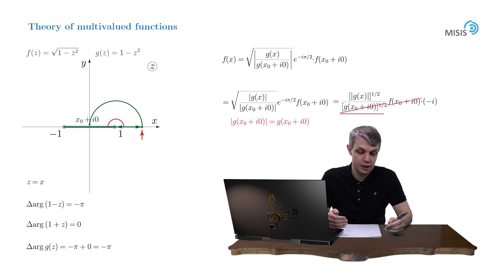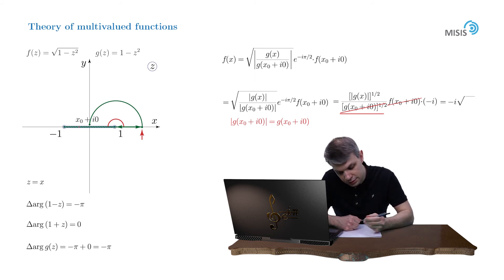And as a result, as it should be, our Laurent expansion at point x is independent of the reference point. So let's rewrite it as negative i multiplied by the square root of the modulus of g of x.